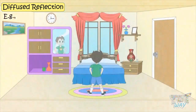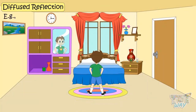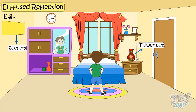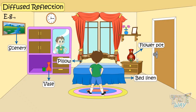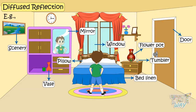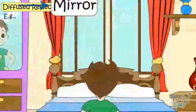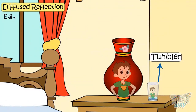Here we have a room with different things: this flower pot, this scenery, this vase, this bedded linen, pillows, this door, this window, this mirror, and this tumbler. You can see everything, and you can also see a reflection in this mirror, on this tumbler, and even on this pot.